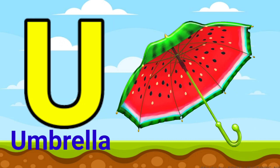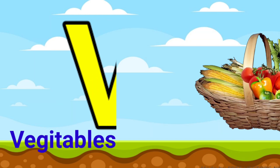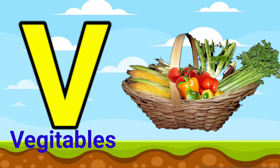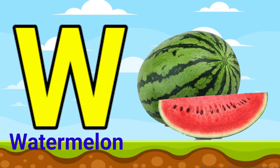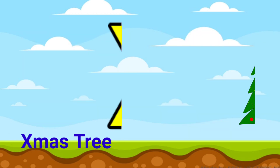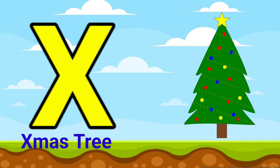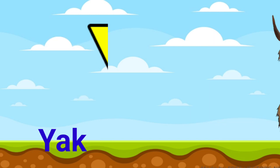U for umbrella, V for vegetables, W for watermelon, X for egg.